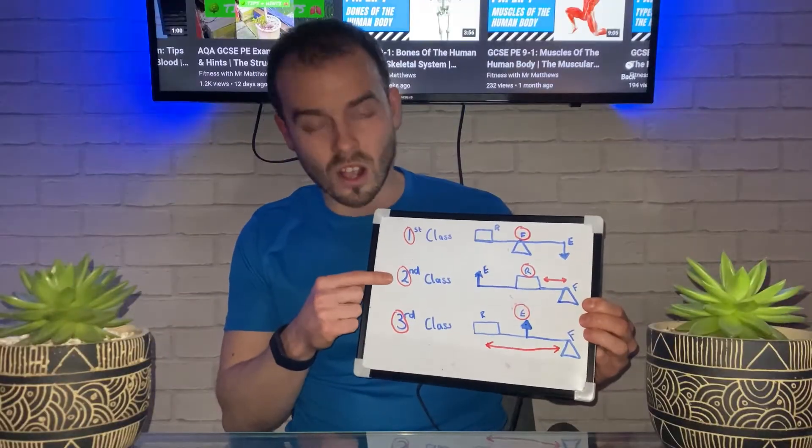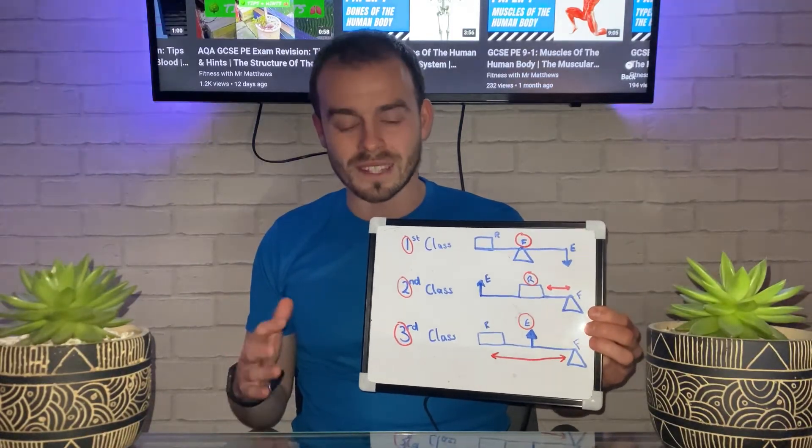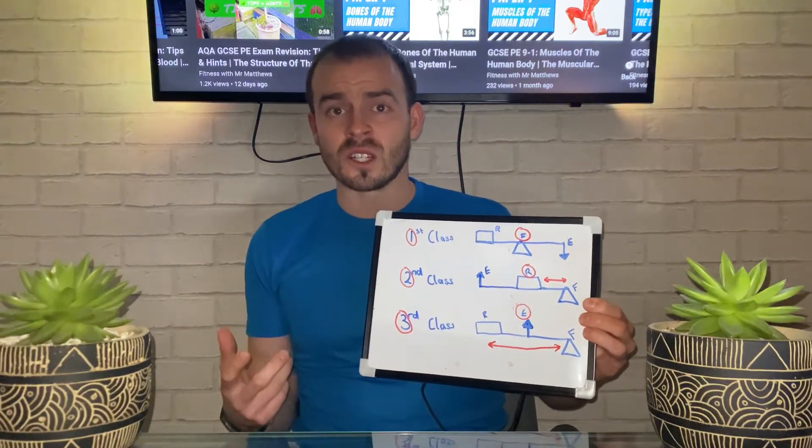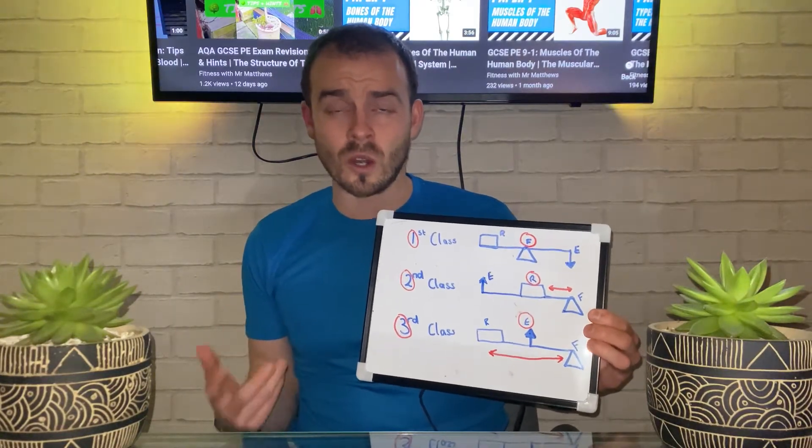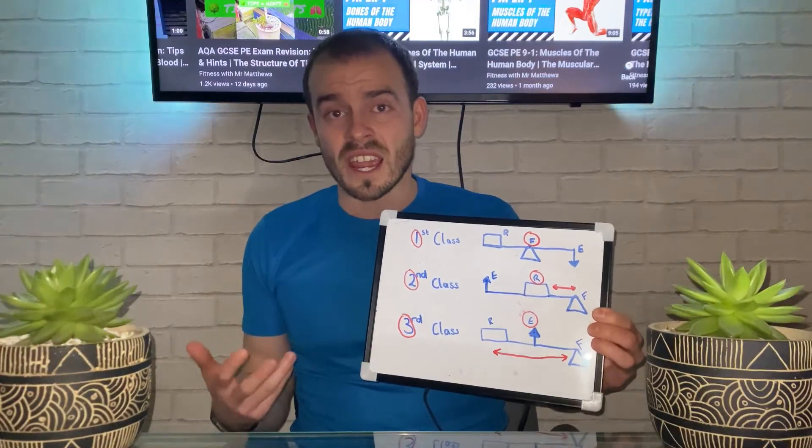For a second class lever system, we look at the ankle in different scenarios. Examples include a calf raise, the starting position when exploding out of the blocks in a 100-meter sprint, or running in general.